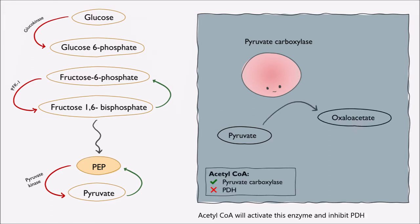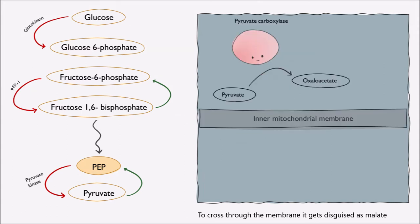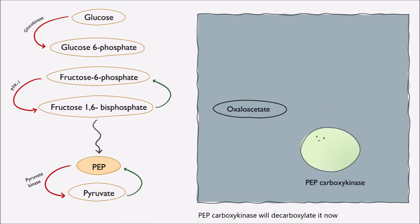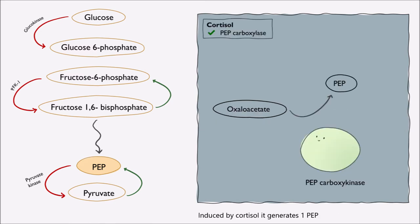Acetyl-CoA will activate pyruvate carboxylase and inhibit PDH. To cross through the membrane, oxaloacetate gets disguised as malate. Once through, it gets reoxidized to oxaloacetate. PEPCK will decarboxylate it — induced by cortisol — and generates one PEP.